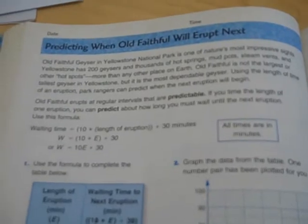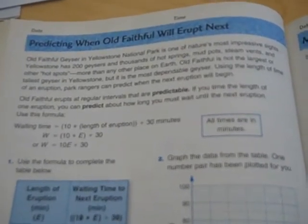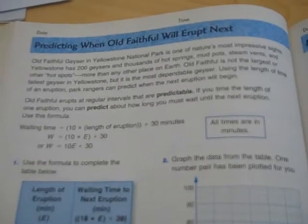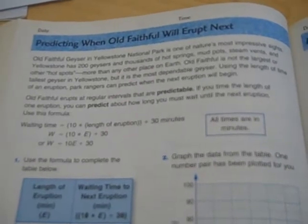Old Faithful erupts at regular intervals that are predictable. If you time the length of one eruption, you can predict about how long you must wait until the next eruption. And you use this formula.